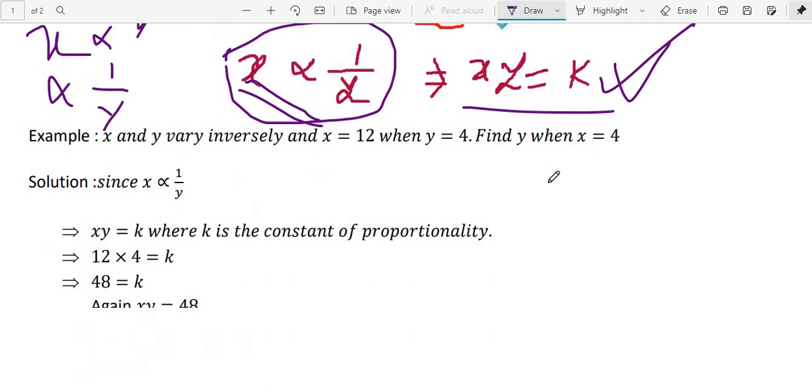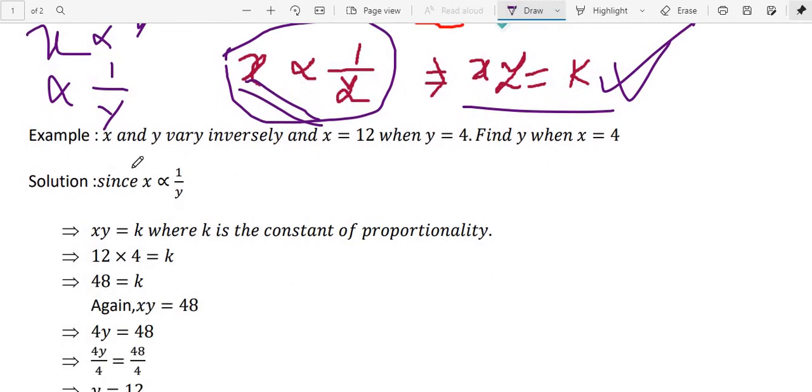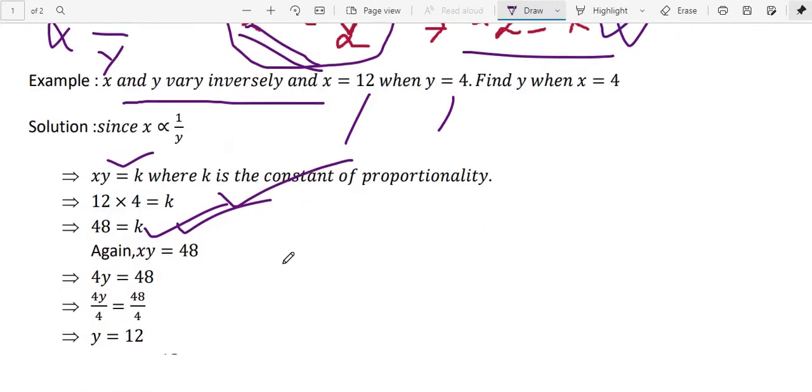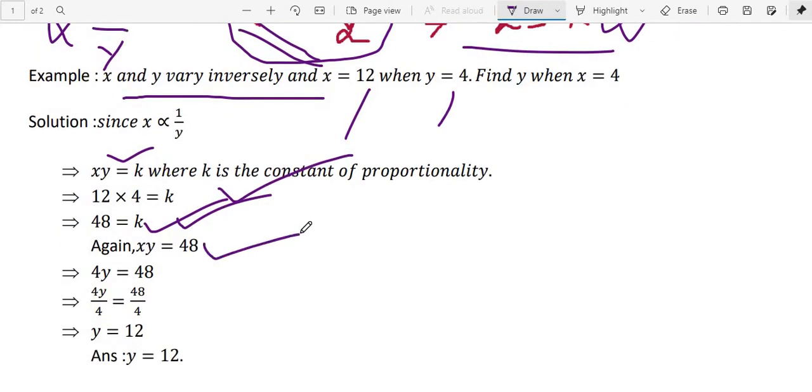Now let us take an example. Very simple example. X and Y vary inversely. So X into Y is K, where K is the constant of proportionality. In this problem, this value will remain same. X is 12, Y is 4, put 12 and 4. So K equal to 48. Again, XY equal to K also, you can write 48.